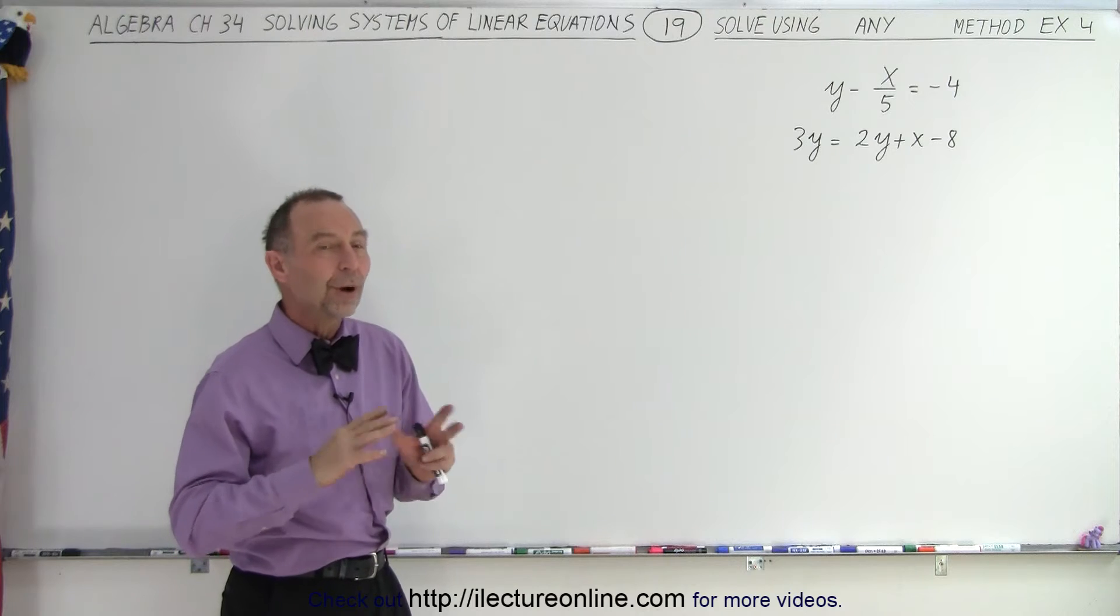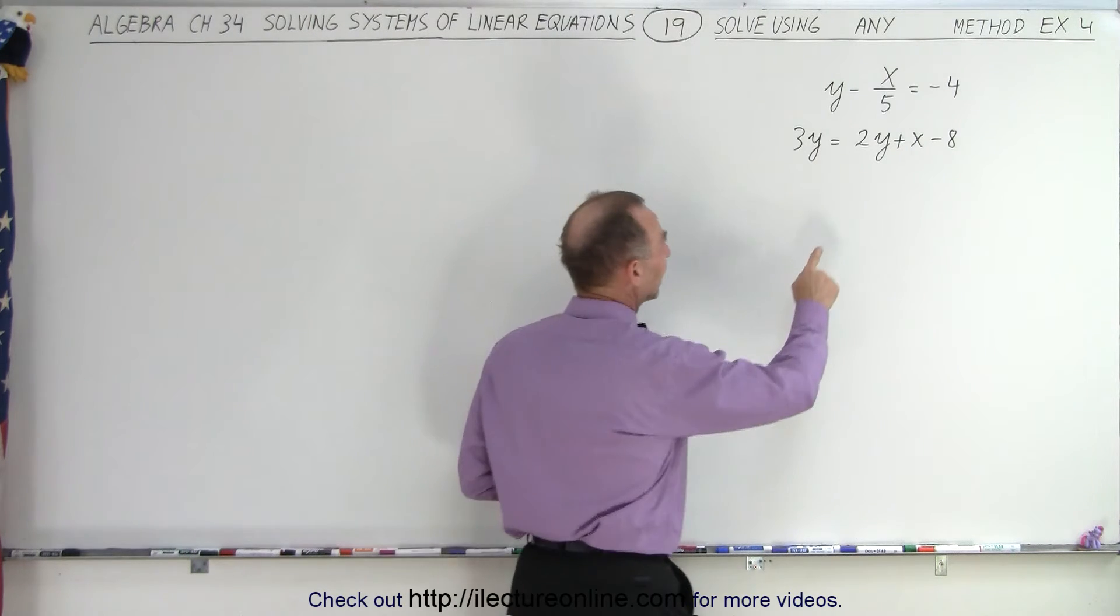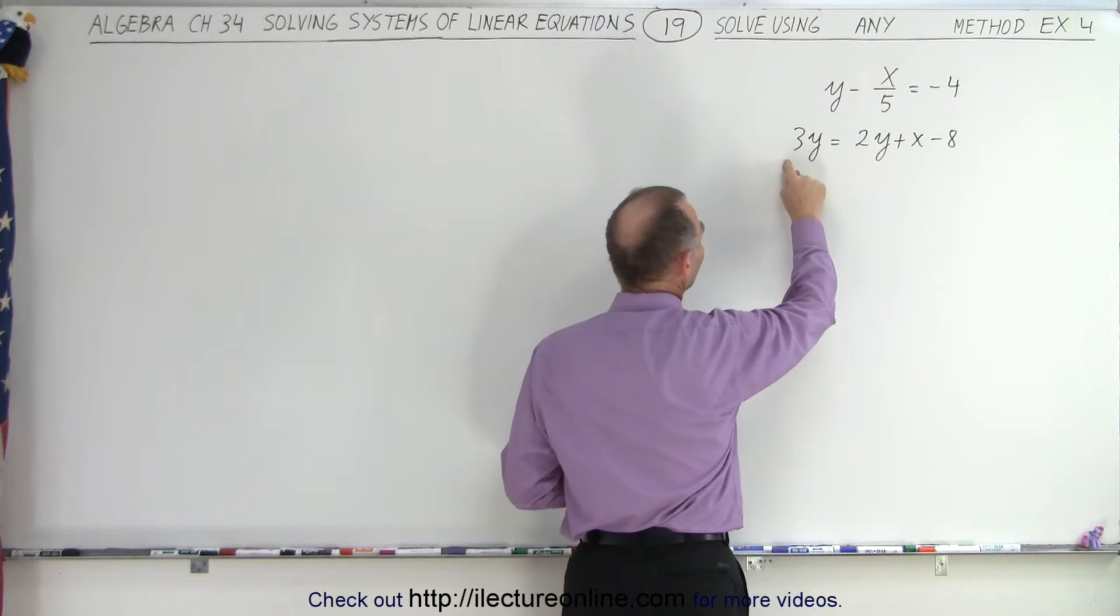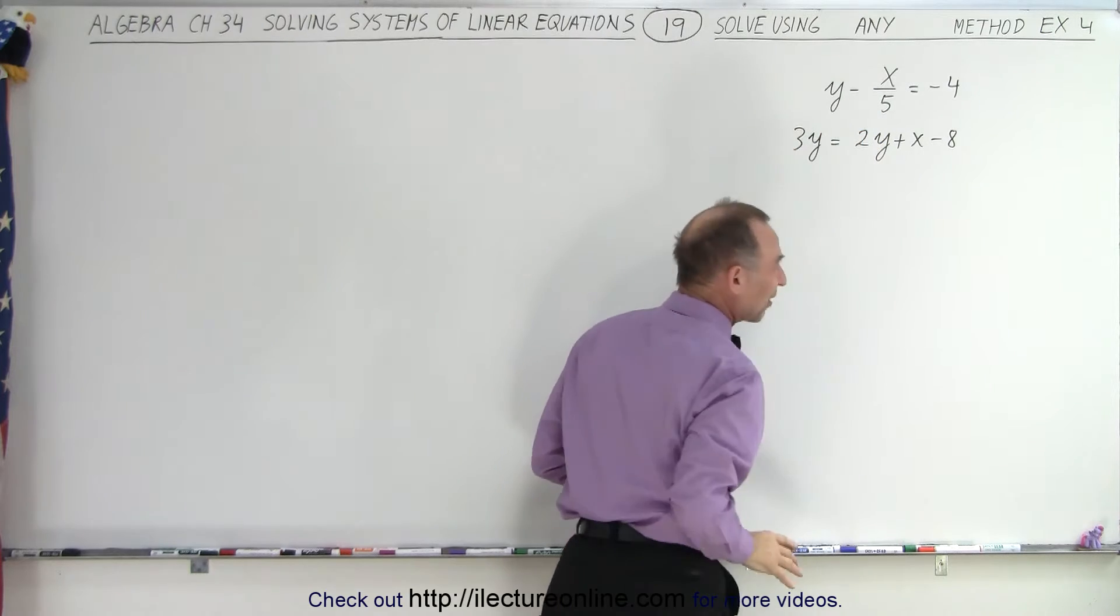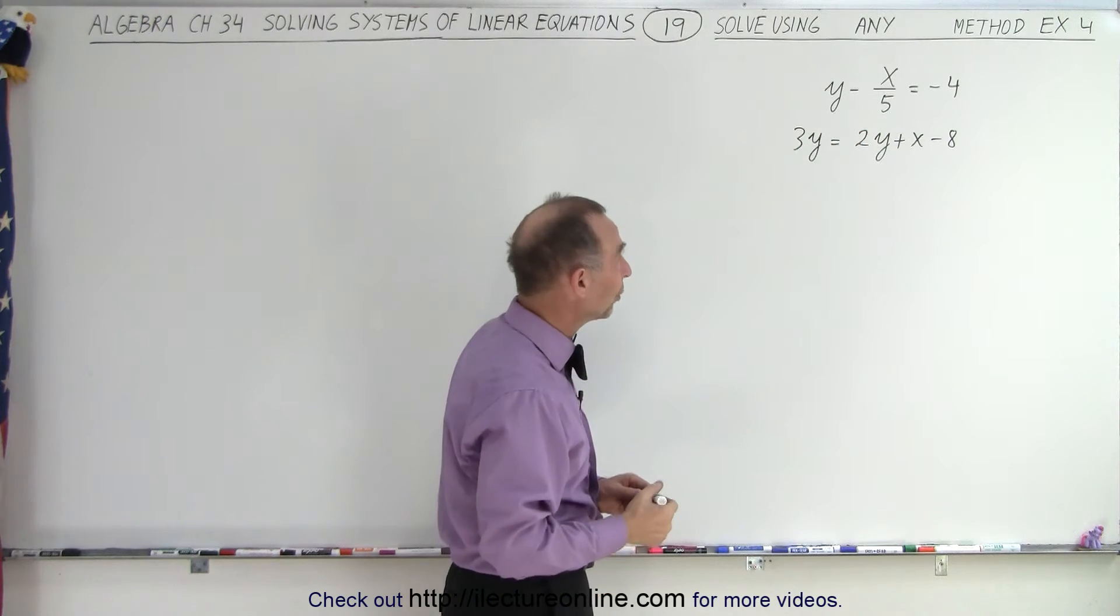So what we're going to do is we're going to rewrite both equations, simplify them. Here we're going to move the 2y to the left side. There we want to get rid of the fraction first, because fractions are hard to deal with.